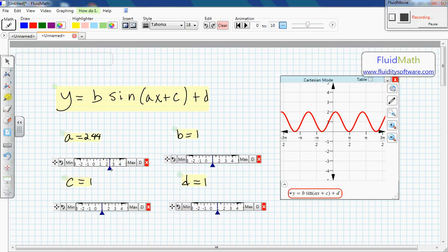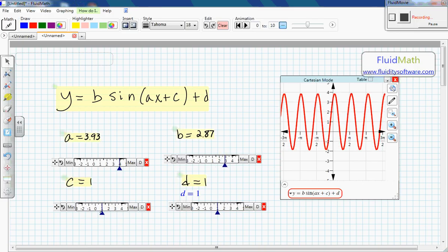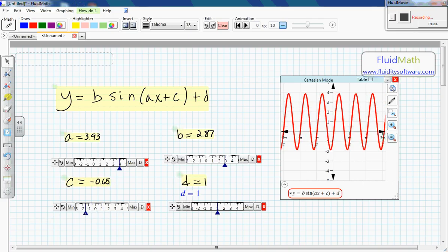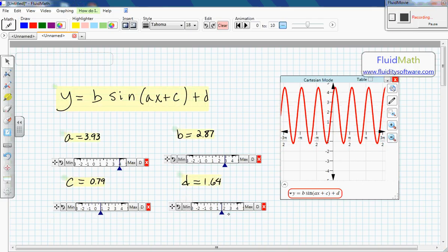So here I'm changing a, and we know a happens to change the frequency. B happens to change the amplitude of the curve. C is the left-right shift, and d is the up-down shift.